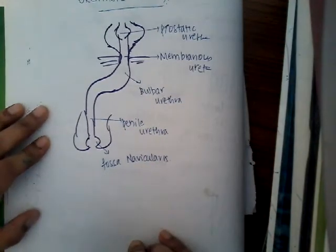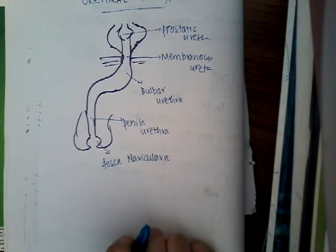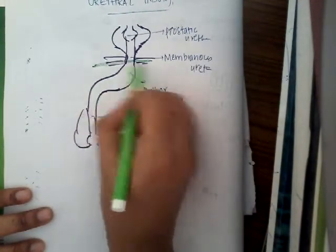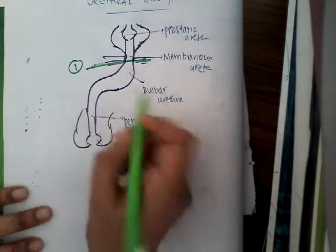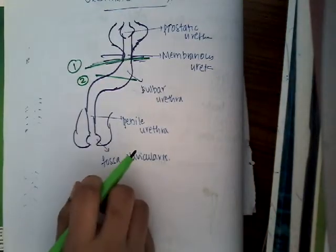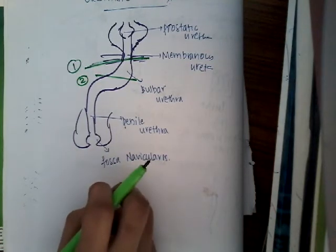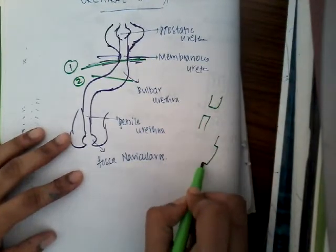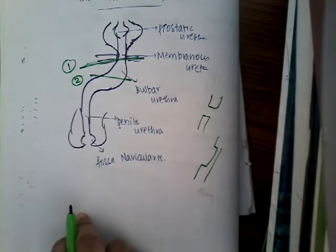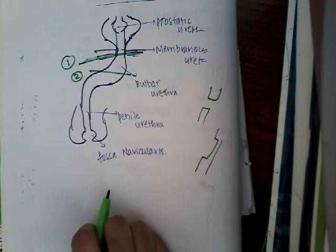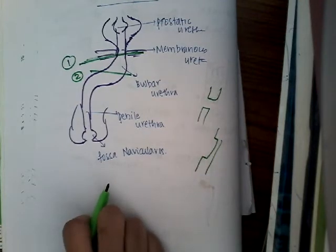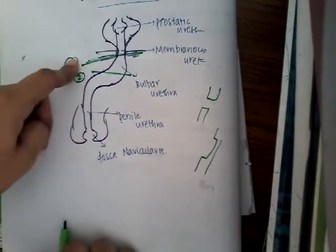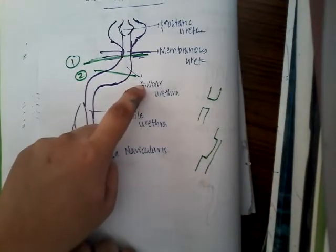The injury to the urethra can be divided into two types based on the site of rupture: rupture in the membranous urethra or rupture in the bulbar urethra. Additionally, the rupture can be classified as complete rupture or incomplete rupture.